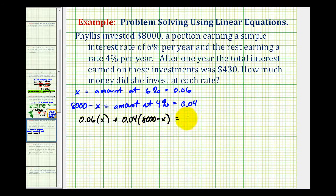This must equal $430. Now if we solve this equation for x, we can determine the amount in each account. However, notice we do have decimals in the equation. It's probably going to be easier if we eliminate these decimals. We can do that by multiplying both sides of the equation by 100, which would be equivalent to moving the decimal point to the right two places.